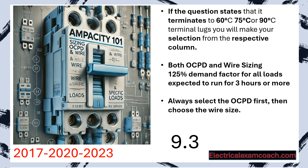If the question states that it's terminating to 60, 75, or 90 degrees C terminal lugs, you're going to make your selection from that respective column under normal circumstances. With both OCPD and wire sizing, we still have that 125% demand factor for all loads that are expected to run for three or more hours. We will always select the overcurrent protective device first and then choose our wire size — it will make more sense why we do that once we start sizing services in the next lesson and larger amperage questions like a thousand amps or greater.